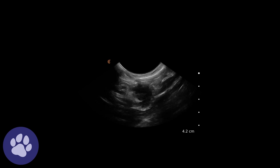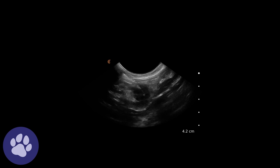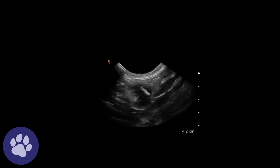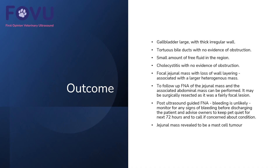The more samples we get, the more likely we'll get a diagnosis, so taking a good four or five samples from a lesion is very worthwhile. In this case, we had a large gallbladder with a thick irregular wall, tortuous bile ducts with no evidence of obstruction, and a small amount of free fluid in the region — we determined there was cholecystitis with no evidence of obstruction. There was also a focal jejunal mass with loss of wall layering associated with a larger heterogeneous mass. We followed that up by taking a fine needle aspirate of the jejunal mass, which came back as a mast cell tumour.